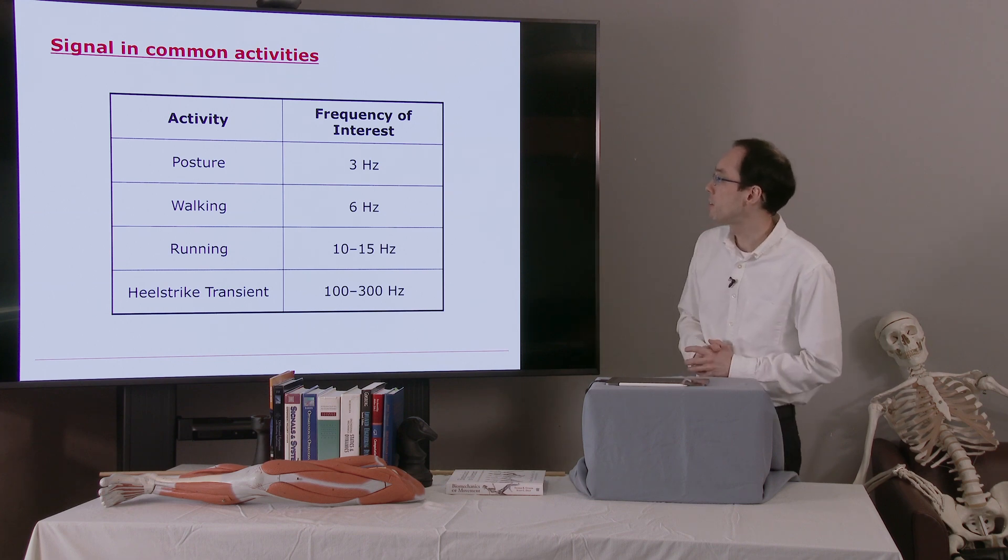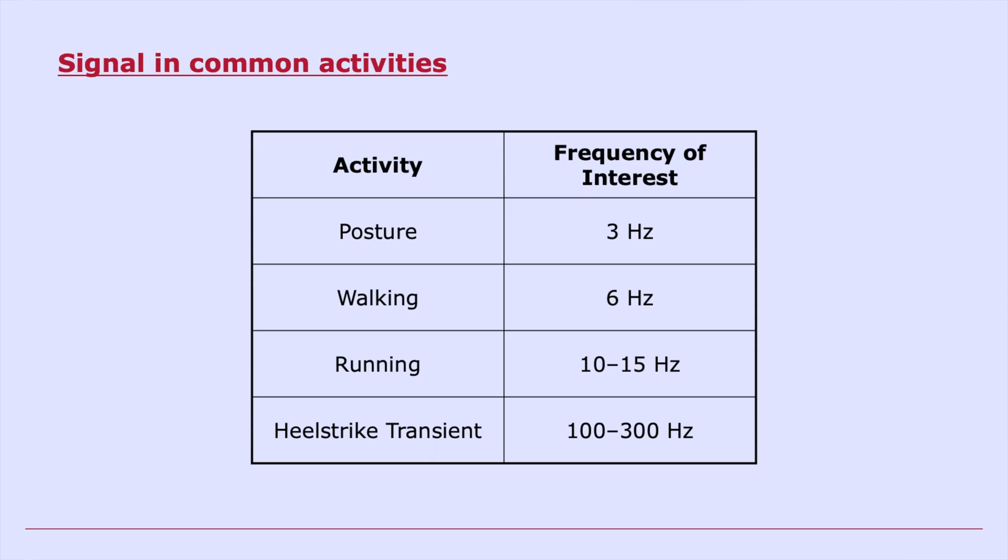Here are some common activities with their frequencies of interest. Postural sway and walking have relatively low frequencies. The heel strike transient during running has fairly high frequency content, so you'd have to pick your cutoff frequency of a filter with that in mind.